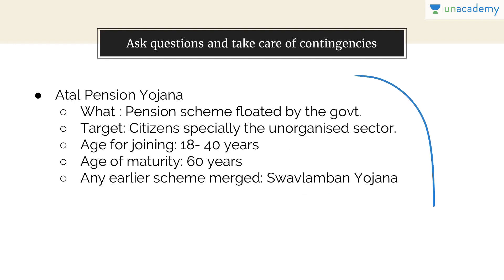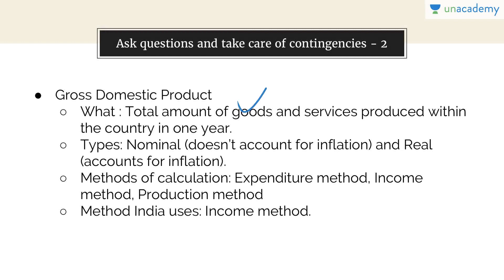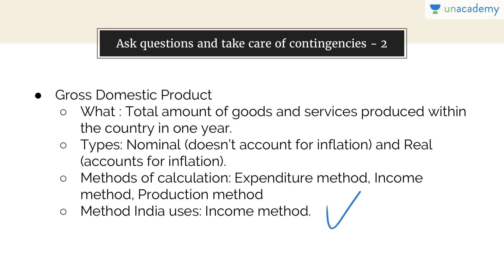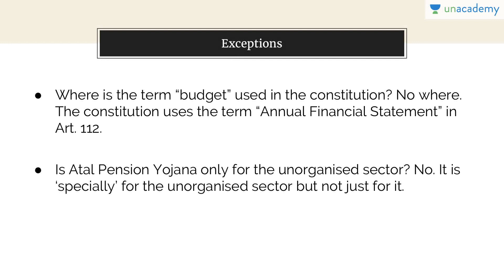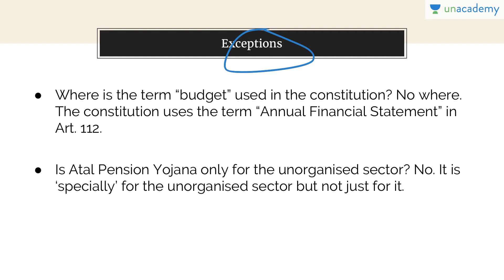For GDP notes: Gross Domestic Product is the total amount of goods and services produced within the country in one year. Types: nominal GDP does not account for inflation; real GDP always accounts for inflation. Methods of calculation include expenditure method, income method, and production method — India commonly uses the income method. Budget: the term 'budget' does not appear in the Constitution; it is referred to as the Annual Financial Statement in Article 112. Always remember such exceptions in your notes.